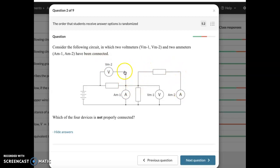So let's have a look at which of these is not. VM2 is in parallel with this resistor. So I guess what you're looking at here is the voltage across this resistor. AM1 is not in series with anything, really. It's in parallel with this one.